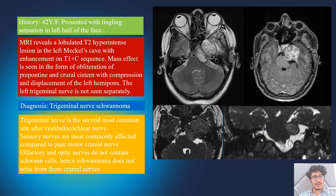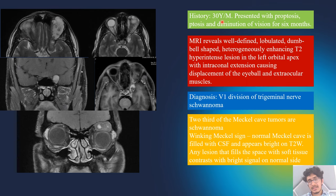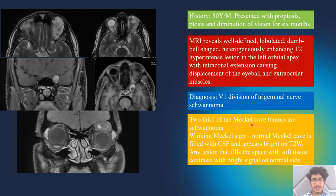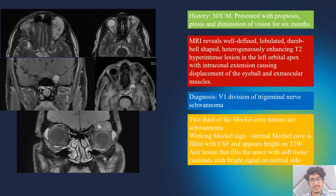Trigeminal schwannoma is the second most common site after the vestibulocochlear nerve. Sensory nerves are most commonly affected in schwannoma compared to pure motor cranial nerves. Olfactory and optic nerves do not contain Schwann cells and are therefore never affected. A 30-year-old man presented with proptosis and diminution of vision. MRI showed a lobulated dumbbell-shaped T2 hyperintense lesion with heterogeneous enhancement in the Meckel's cave extending into the orbit through the orbital apex — a V1 division trigeminal schwannoma. Two-thirds of Meckel's cave lesions are schwannomas. The 'empty Meckel's cave sign' refers to the normal cave being filled with CSF appearing bright on T2; any lesion filling this space obliterates the T2 hyperintensity, and contrast enhancement is seen contrasting with the bright contralateral side.